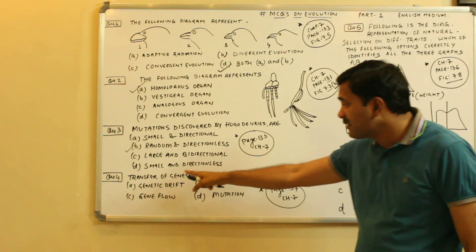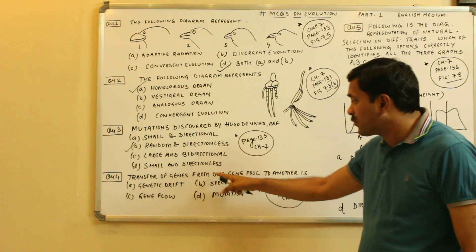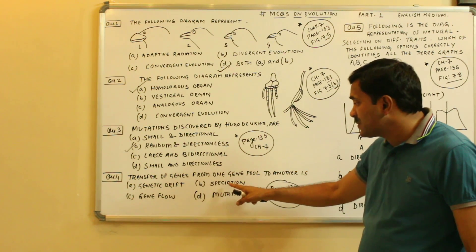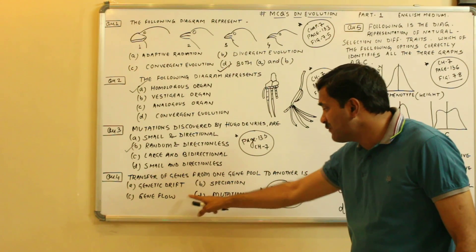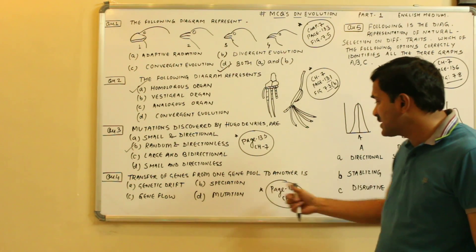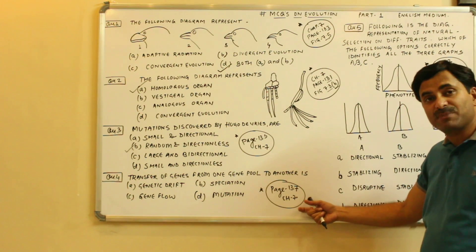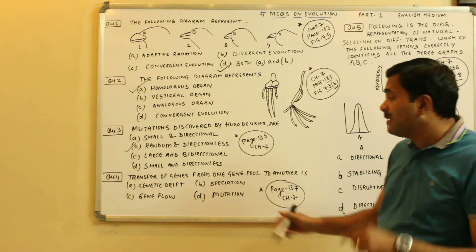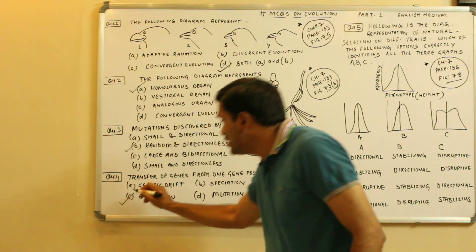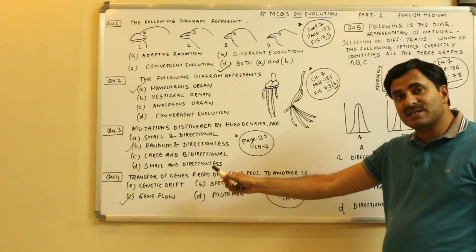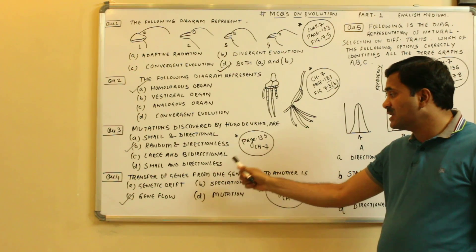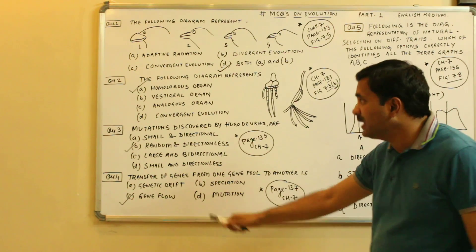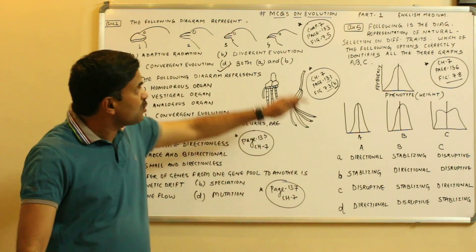Question number four: transfer of genes from one gene pool to another is called — genetic drift, speciation, gene flow, or mutation? As given on page 137, chapter 7, the transfer of genes from one gene pool to another gene pool is called gene flow. So option C is the correct one.